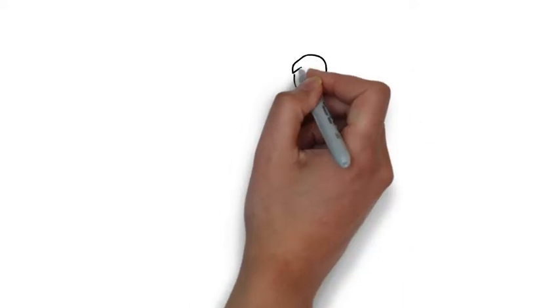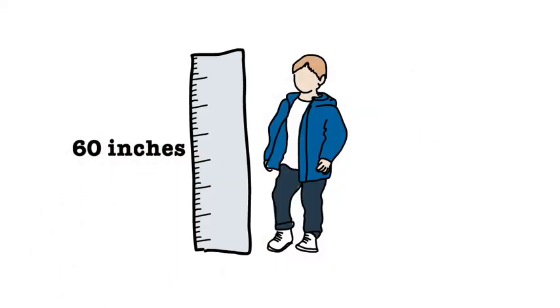Let's say that you are given a problem and are told that a boy is 60 inches tall, but the problem wants you to determine how tall the boy is in feet. You can use the conversion of one foot equals 12 inches to help you determine the answer.